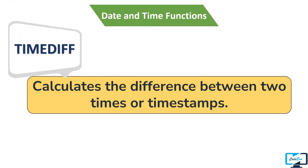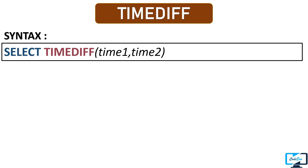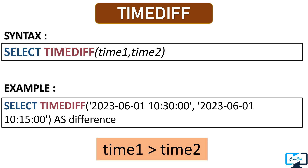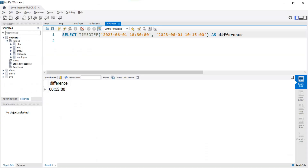Likewise we have the TIMEDIFF function, which returns the difference between two times or timestamps. We pass time1 and time2 as parameters, or you can pass datetime expressions or timestamps. Here also time1 must be greater than time2, otherwise this function will return a negative output. Executing the example query, our output is 15 minutes, which is correct because both parameters have the same date and the difference between 10:30 and 10:15 is 15 minutes.